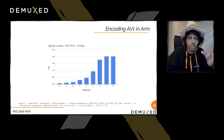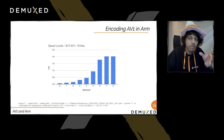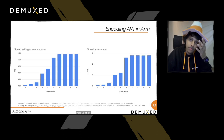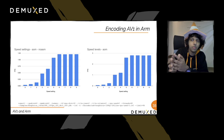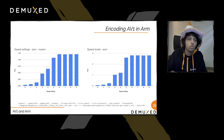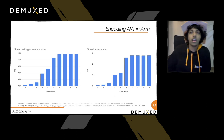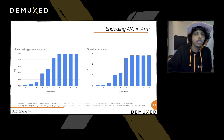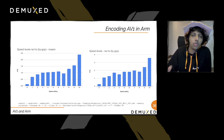In benchmarks on SVT-AV1 using 16 threads and 8 tiles, we're getting around 2 FPS on ARM. For libaom, SIMD code paths provide around 2x speedup, going from 1–1.2 FPS to about 2–2.5 FPS. rav1e using the Rayon parallelism framework achieves around 3–3.5 FPS — the best result among the encoders tested on ARM.